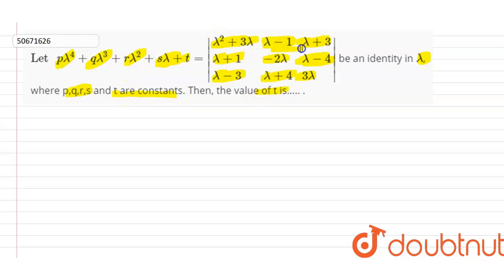Theek hai, to mujhe lambda mein jo equation hai, wo is determinant ke barabar hai. Theek hai, to p, q, r, s, t jo hain wo constants hain, to t ki value kya hogi?